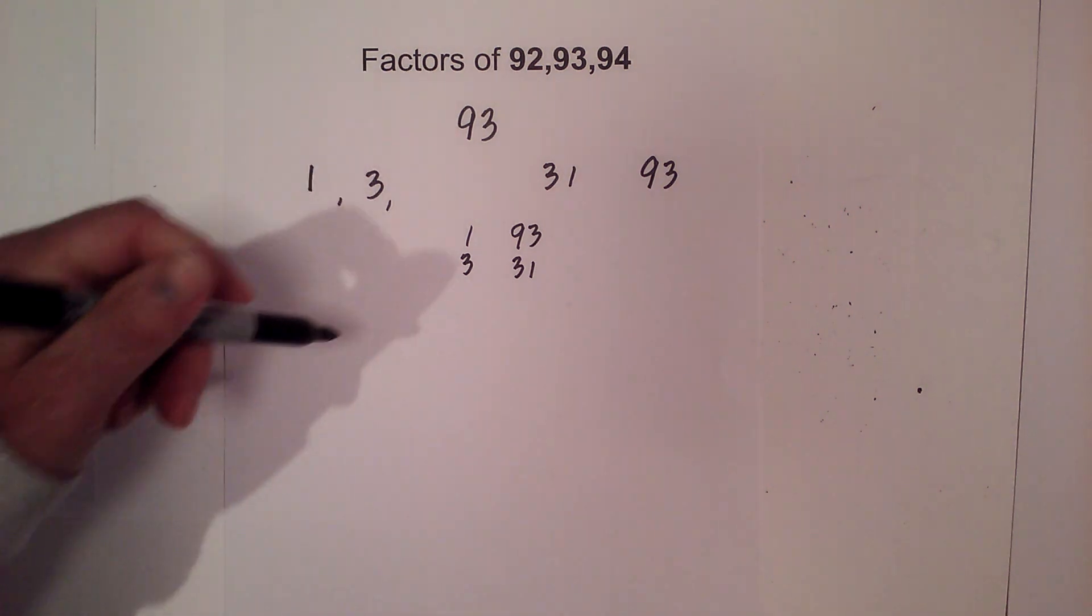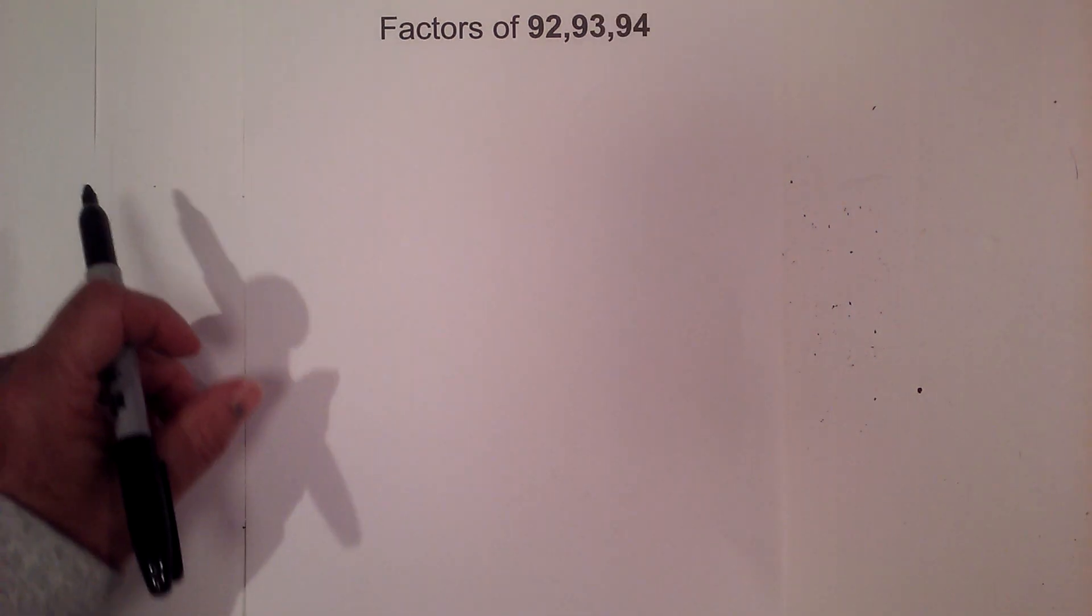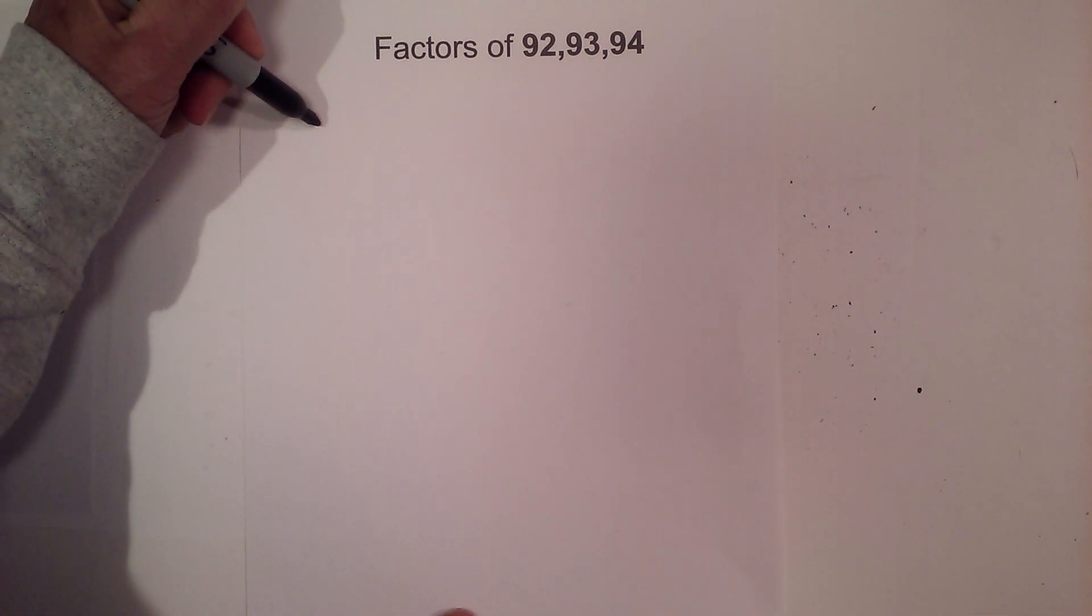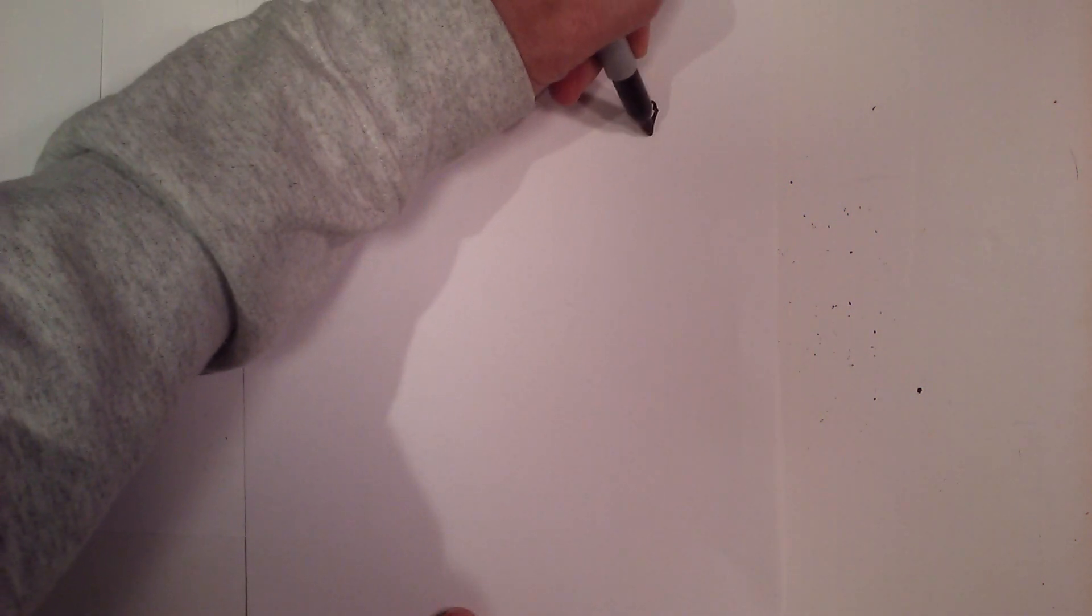And last but not least let's look at 94. 94. And with 94 it's also a composite number. So let's go 1 times 94.